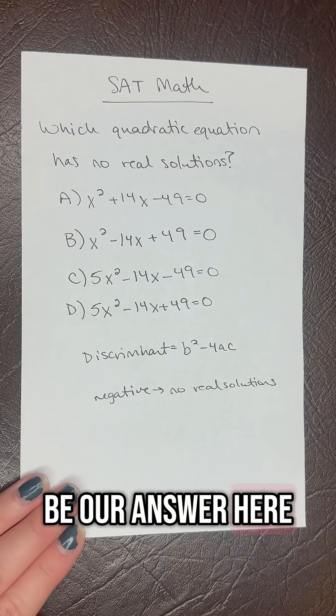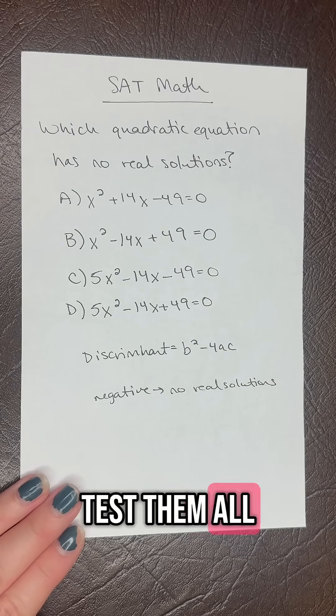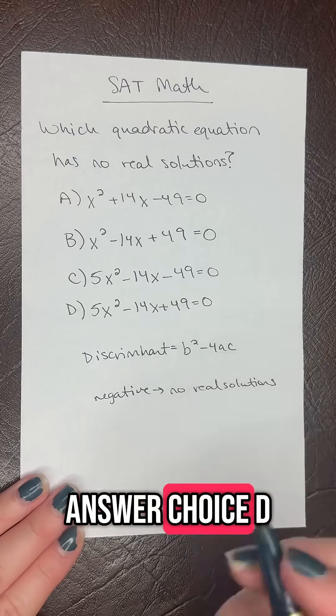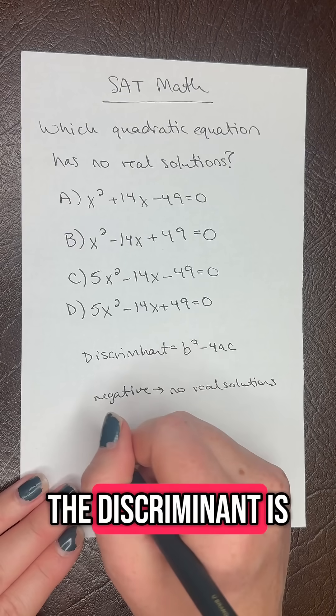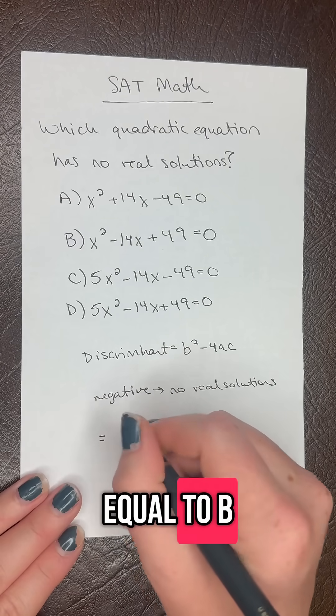Let's look at answer choice D. It's trial and error here. The discriminant equals b squared, so that's negative 14 squared, minus 4 times your a term, which is 5,